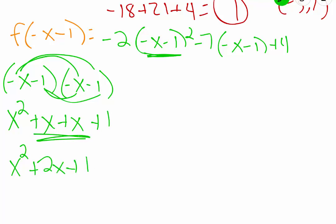So I'm going to drop down the negative 2, and when we squared this, we got x squared plus 2x plus 1. Now we are going to distribute that negative 7, so negative 7 times negative x is a positive 7x. Negative 7 times negative 1 is a positive 7, and I'm going to drop down that plus 4.